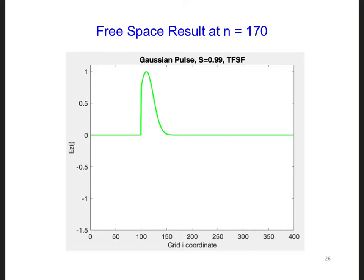This is because it takes about 100 time steps for the wave to propagate to the total field scatter field interface, which is right about here, since total field scatter field is equal to 100.